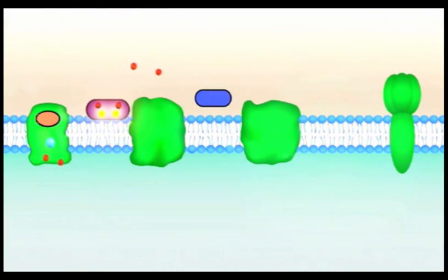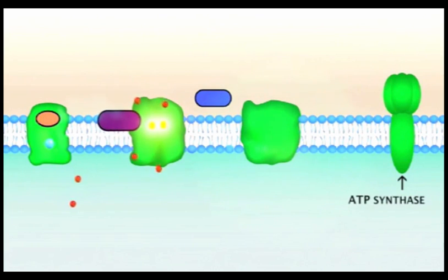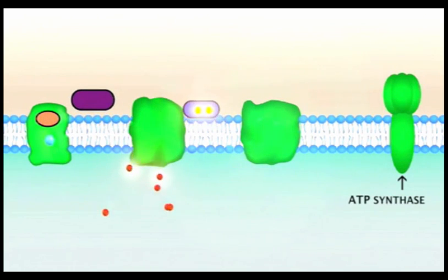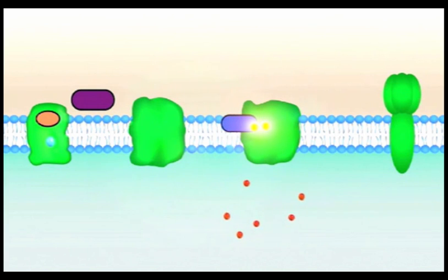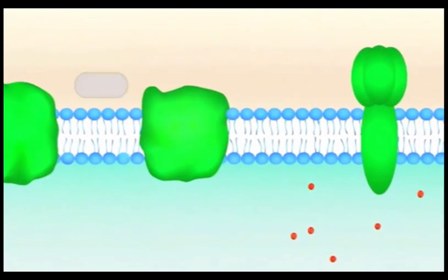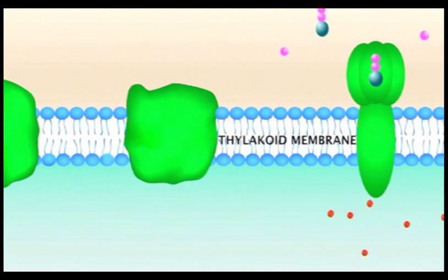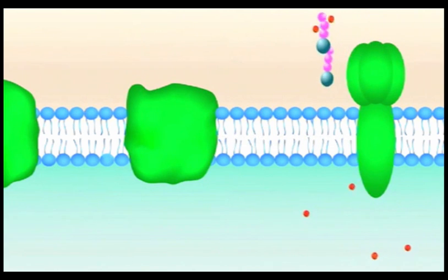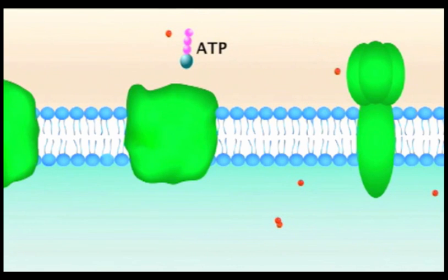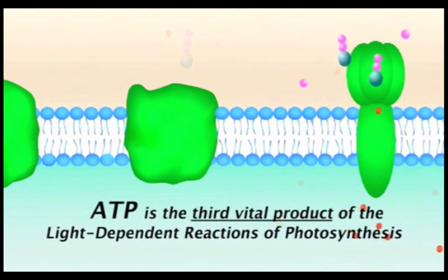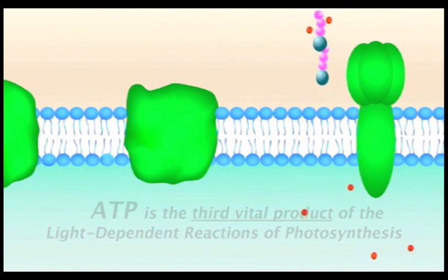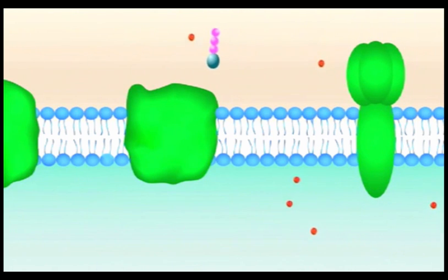In the final step of the light-dependent reactions, the ATP synthase complex utilizes the electrochemical force created by the unequal concentration of hydrogen ions on either side of the thylakoid membrane to make ATP from ADP and phosphate ions. One ATP is produced for each hydrogen ion that passes through the complex. ATP is the third vital product of the light-dependent reactions of photosynthesis and will provide the chemical energy needed to make sugars in the light-independent reactions of photosynthesis that follow.